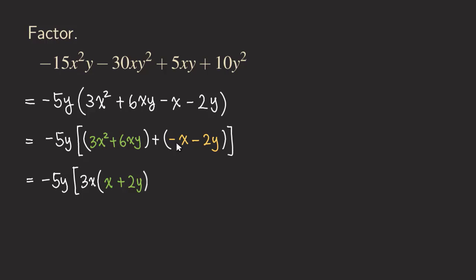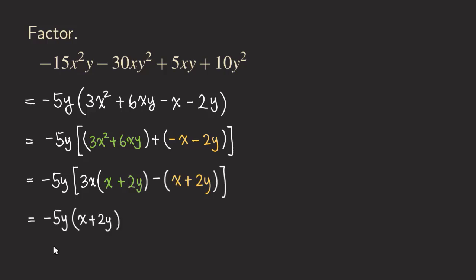For the second group, there is a negative one as the coefficient in front of X, so we factor out negative one. The plus sign between the groups then becomes a minus. After factoring negative one we get X plus two Y. As you can see, we have the same factor X plus two Y in both groups. So we factor out X plus two Y, and we are left with three X from the first term and minus one from the second term.